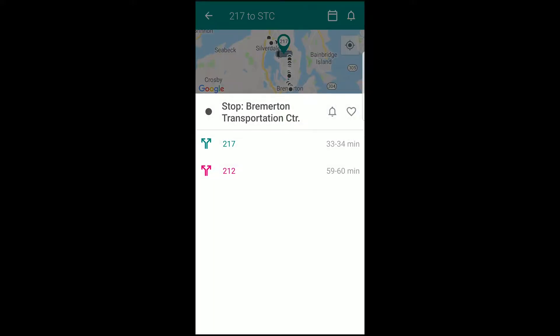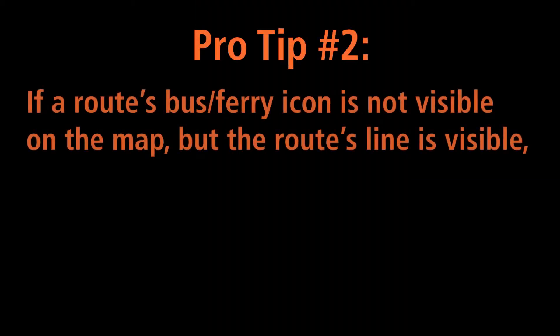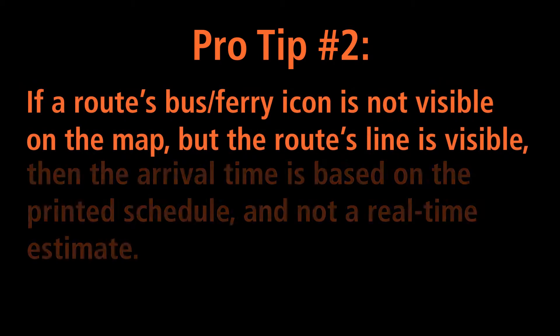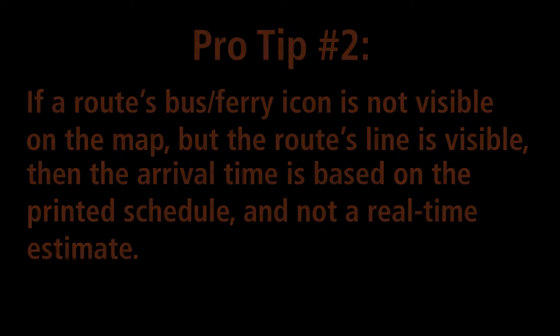Arrival times are based on real-time information and are sorted from earliest to latest and then by route number. Pro tip number two: if a route's bus or ferry icon is not visible on the map but the route's line is visible, then the arrival time is based on the printed schedule and not a real-time estimate.